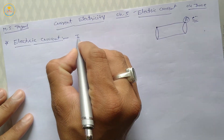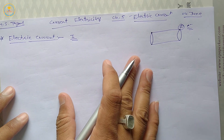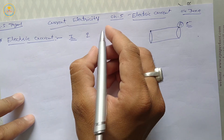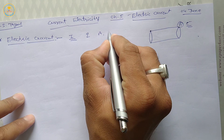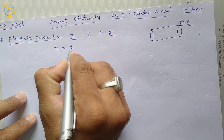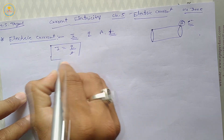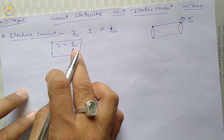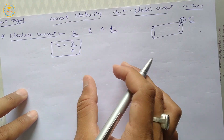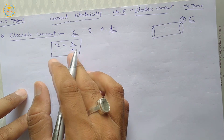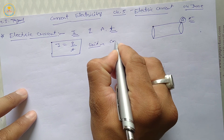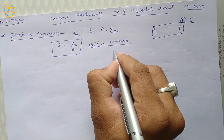Electric current is represented by the symbol I. Suppose the amount of charge Q flows through the cross-sectional area in unit time T, then electric current I is equal to Q upon T. This is the formula of electric current. According to this formula, the unit of electric current is Coulomb per second.